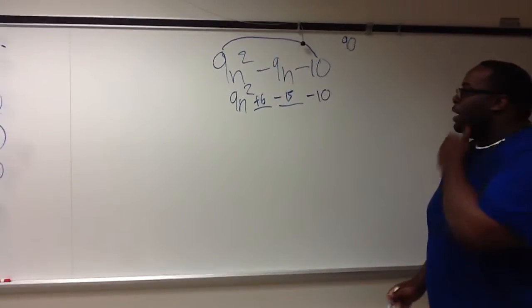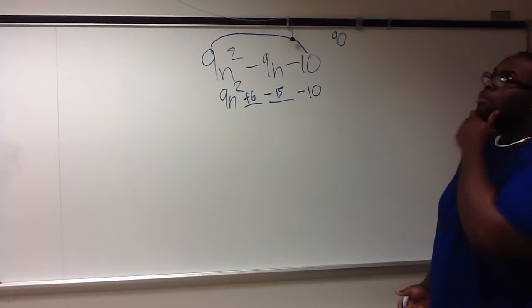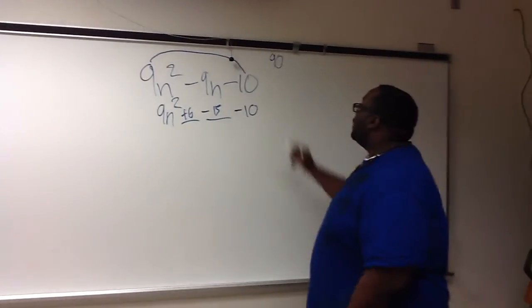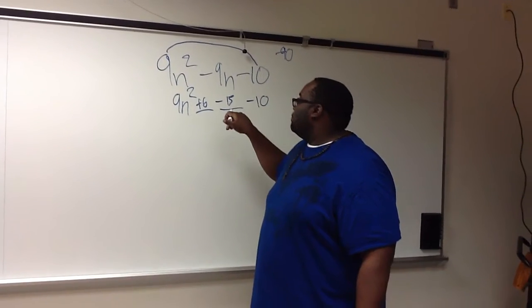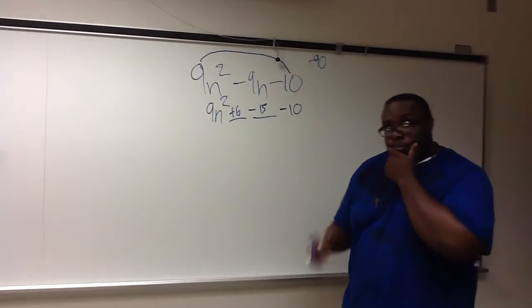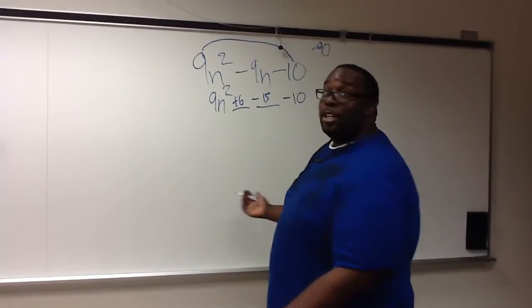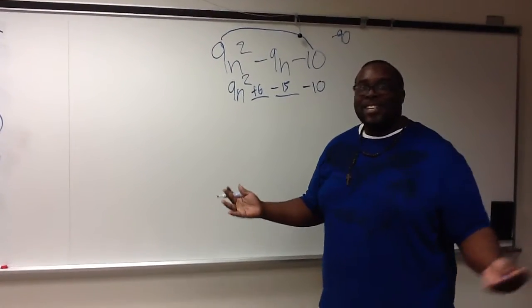So positive 6 and negative 15 equals to 90, and that's a negative 90. So positive 6 and negative 15, it sure does equal to negative 9. I think we got an answer there.